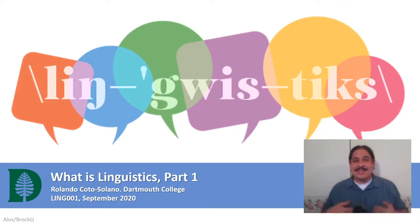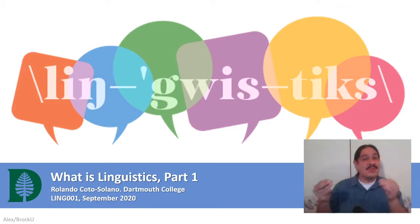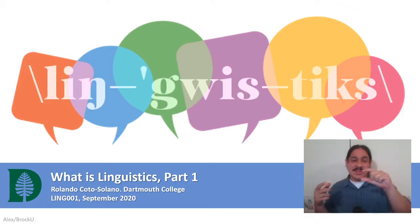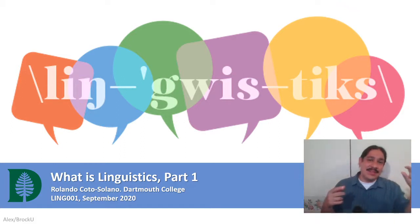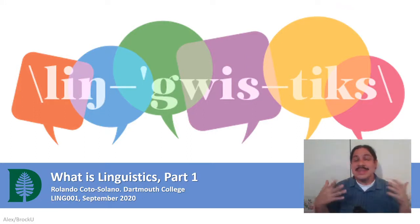In the last video we looked at Swahili verbs and we used them as an example of how we work in linguistics. We take data and we analyze the patterns within the data to then form hypotheses about how a language works. We looked at the pieces of Swahili words and formed a hypothesis that maybe one part signals the subject and another part signals the tense. So we take data and we build hypotheses — that's basically how we work.